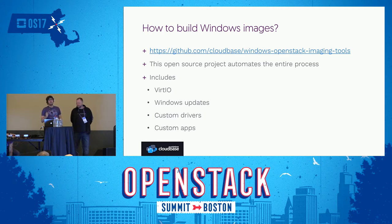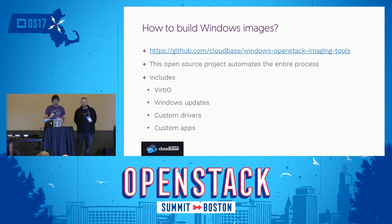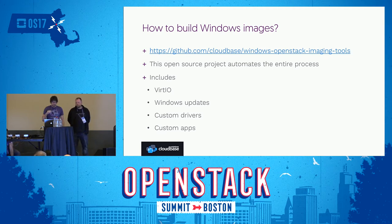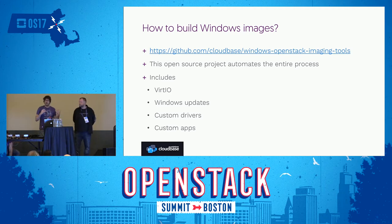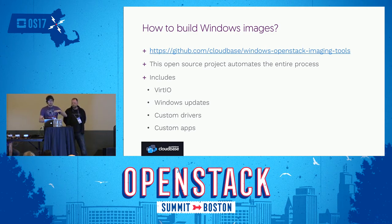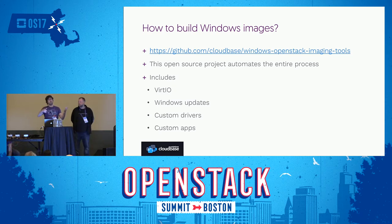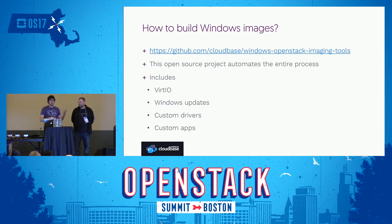How to build Windows images is something everybody always asks. Windows instances can run on every possible hypervisor, not only Hyper-V. Most people ask about KVM, which is the most popular platform for OpenStack, but it also works on VMware, Xen Server, and so on. We keep a bunch of tools updated, with lots of updates in the last cycle including support for Nano Server. These tools generate an offline Windows image and then run it in a Windows machine to apply all Windows updates, plus additional scripts, virtual I/O or VMware tools, custom drivers, and custom applications.